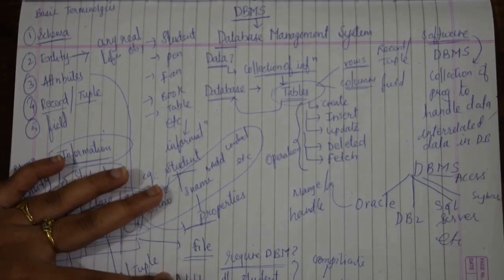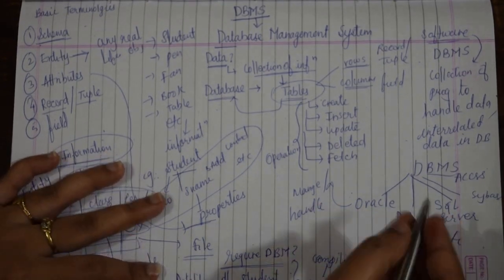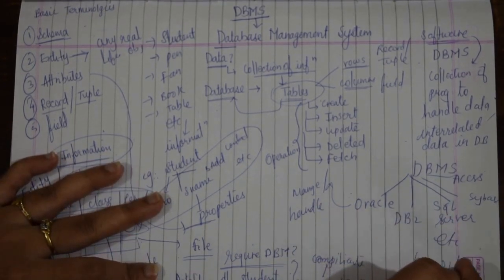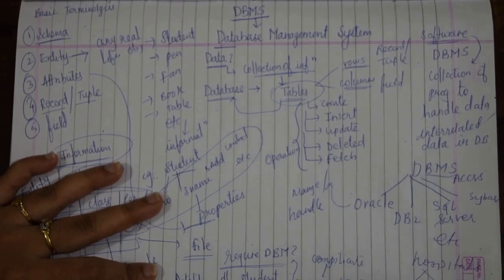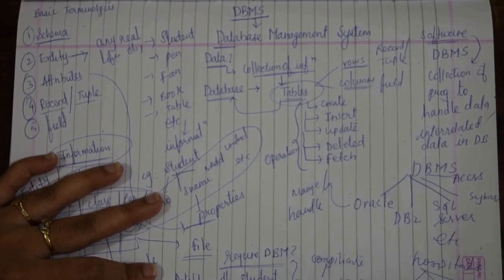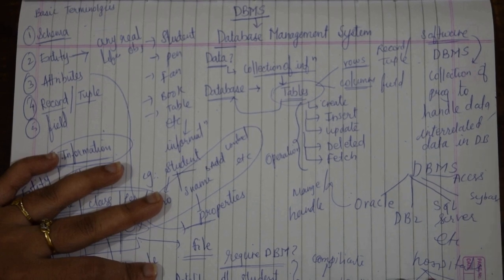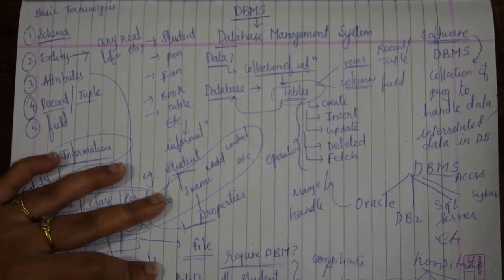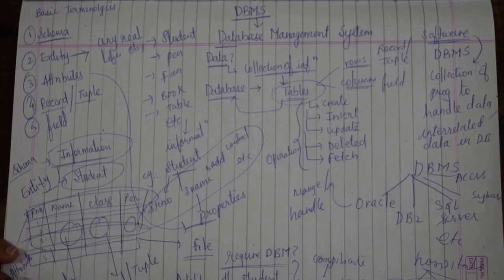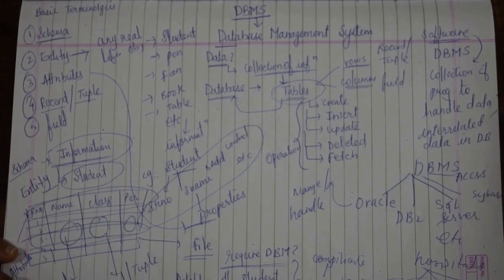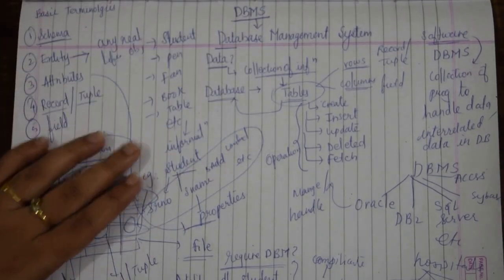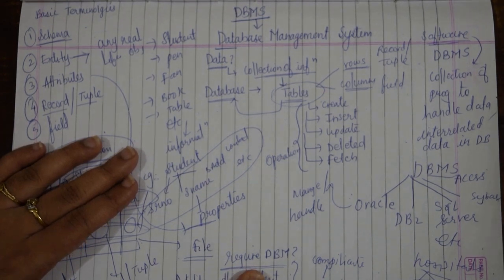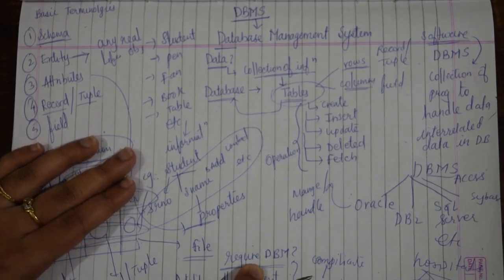We can use it in a college. Similarly, you can use it in a hospital — a hospital has so many doctors, patients, staff, and other details — you can manage all these with database management software. Similarly, you can use it in schools, airlines, and everywhere. So this is all about the basic introduction part of Database Management System.